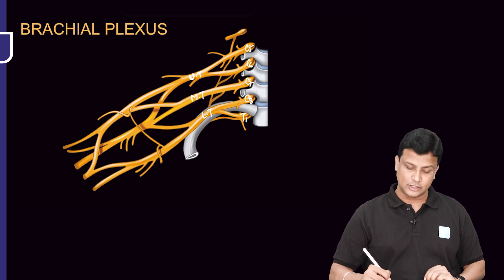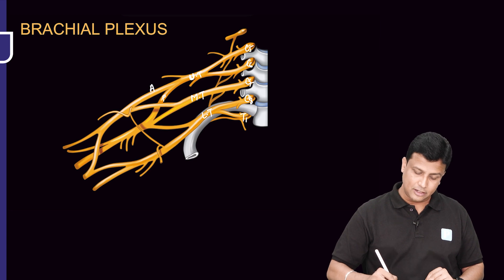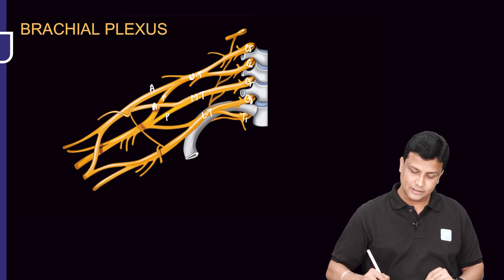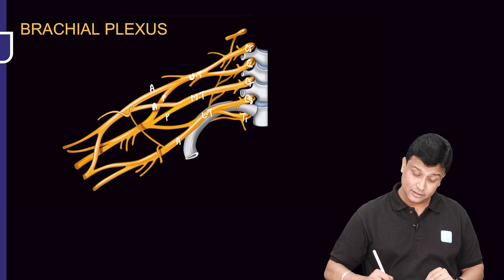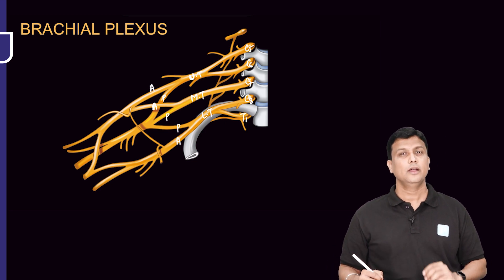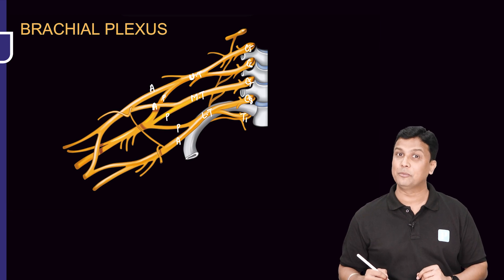Each trunk gives an anterior division and a posterior division — the upper trunk, middle trunk, and lower trunk each give rise to an anterior division and a posterior division.